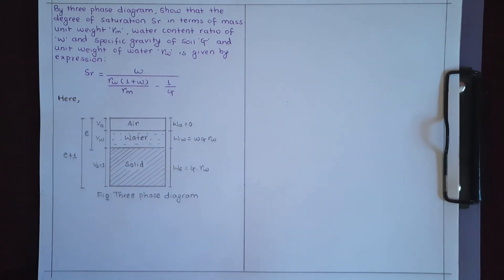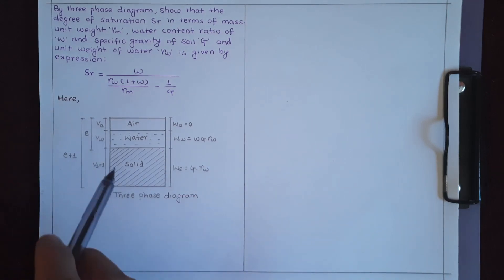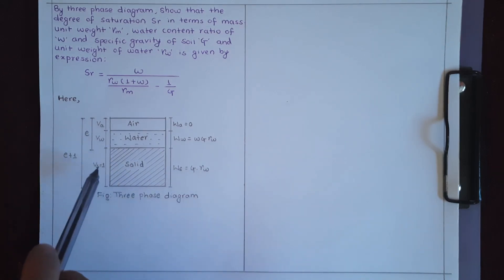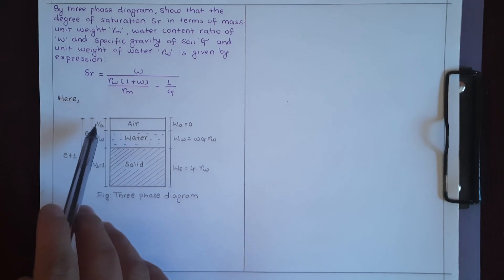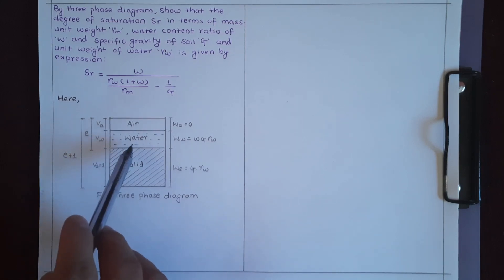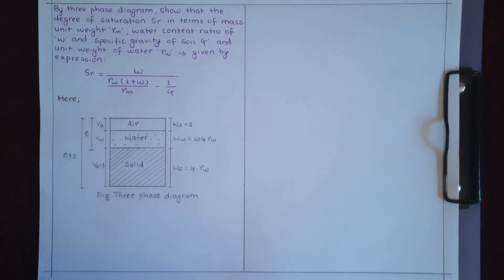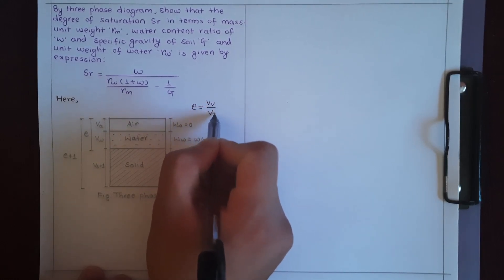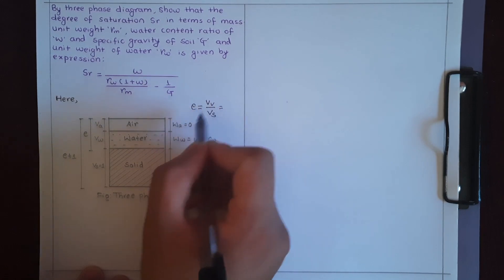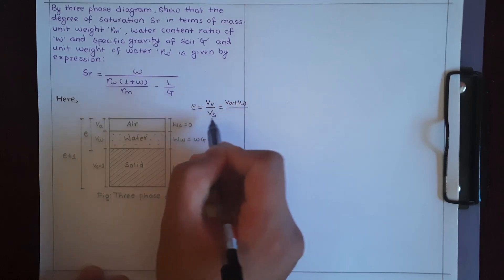To prove this, take a three-phase diagram with solid, water, and air phases. Assuming volume of solid as unity, we define the volume of air as Ba and volume of water as Bw. The void ratio is the volume of voids by volume of solid, and the volume of voids is Ba plus Bw.